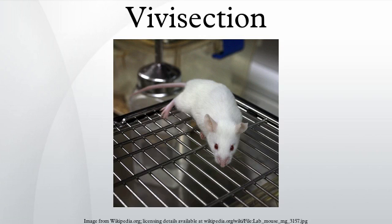In the UK, any experiment involving vivisection must be licensed by the Home Secretary. The Animals Act 1986 expressly directs that, in determining whether to grant a license for an experimental project, the Secretary of State shall weigh the likely adverse effects on the animals concerned against the benefit likely to accrue.